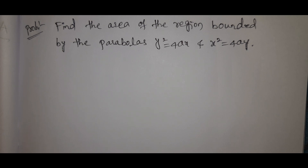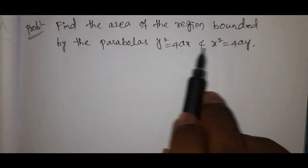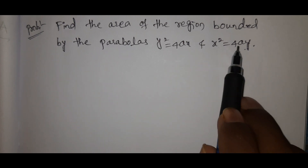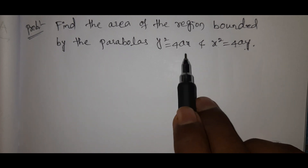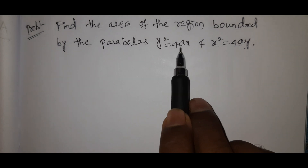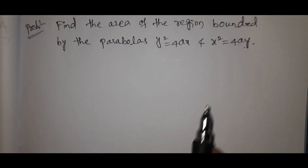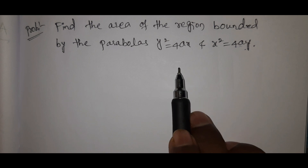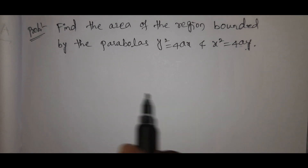This is my second problem. The first problem covered the procedure and was a short answer. The same type of problem — where y²=x and x²=y — is revisited here. The problem involves these two parabolas and the curve they enclose.